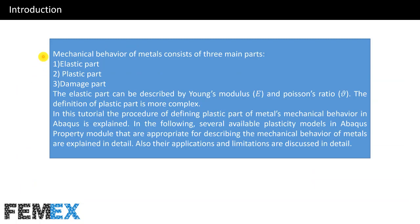Mechanical behavior of metals consists of three main parts: elastic part, plastic part, and damage part. The elastic part can be described by Young's modulus and Poisson's ratio. The definition of the plastic part is more complex. In this tutorial, the procedure of defining the plastic part of metals' mechanical behavior in Abacus is explained. Several available plasticity models in Abacus property module that are appropriate for describing the mechanical behavior of metals are explained in detail.